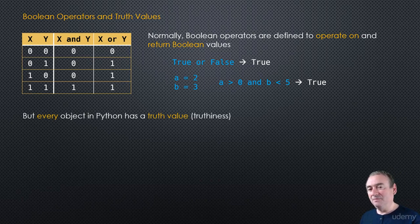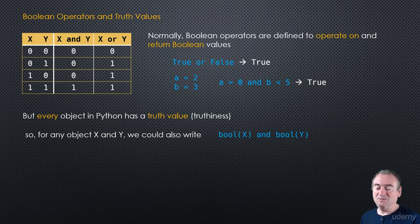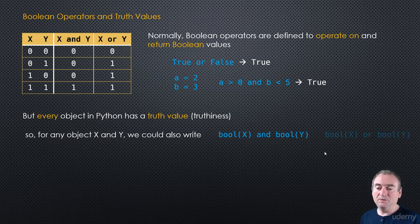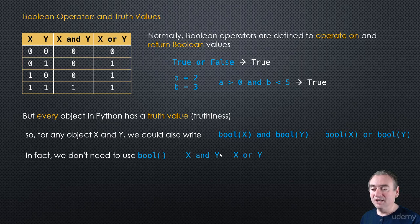But now consider that every object in Python has a truth value — we have this concept of truthiness. So for any object, we really could write bool(x) and bool(y). That is perfectly legal. Since x has a truth value, we can get it by calling bool on x, and the same for y. And we can do the same thing with OR as well.